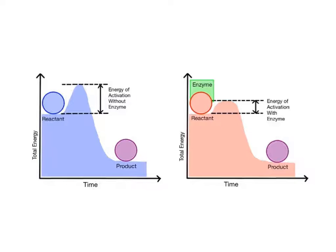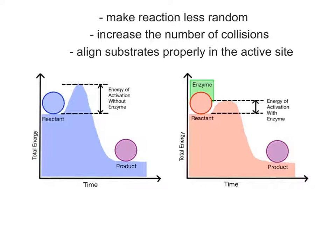Earlier in this unit, we learned that enzymes lower the amount of activation energy, the energy needed to start a reaction. Enzymes are able to do this because they make the reaction less random, and help increase the number of collisions between them and their substrates. They also save energy by aligning the substrates together in the active site in their correct molecular orientation, reducing the need for additional activation energy.